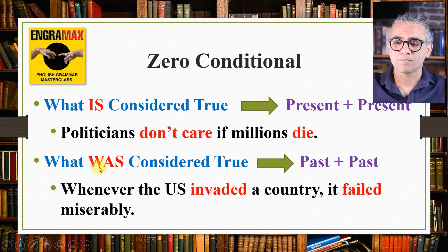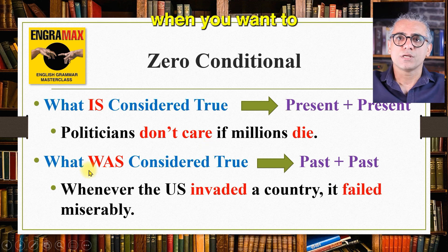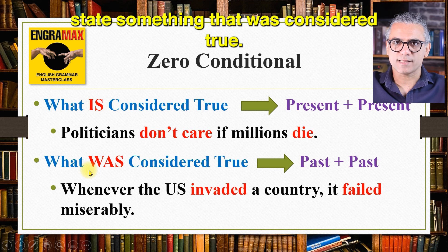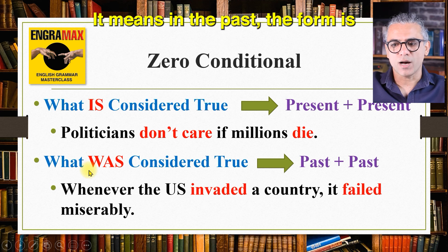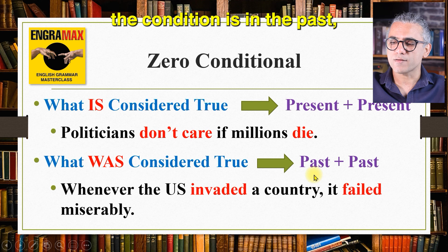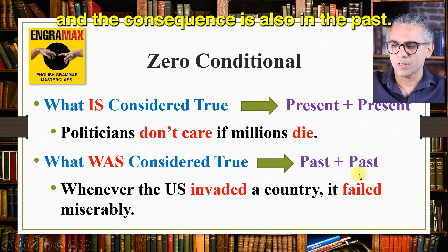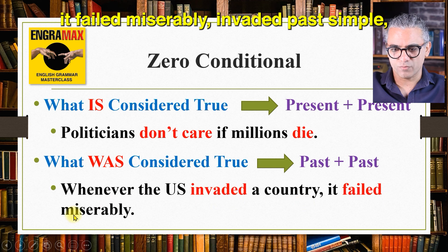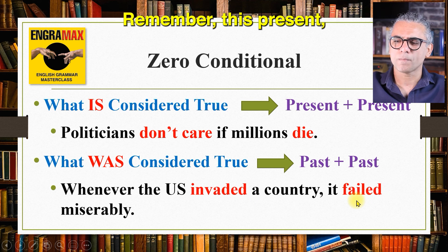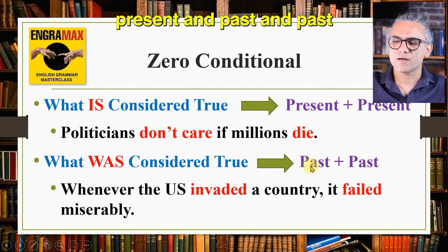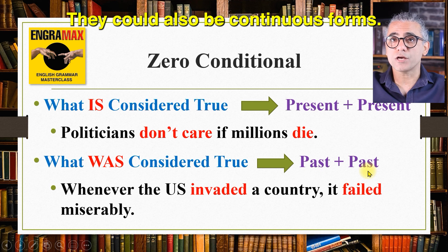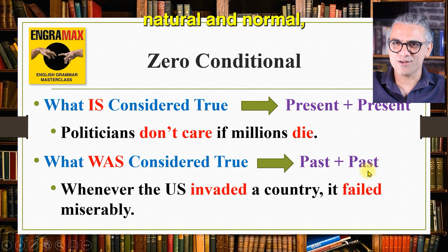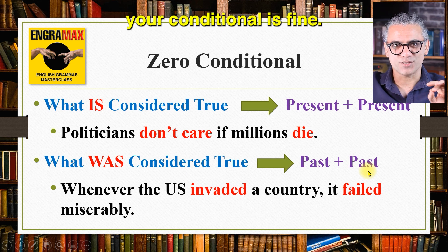Another form of zero conditional is when you want to state something that was considered true in the past. The form is: the condition is in the past and the consequence is also in the past. Example: whenever the US invaded a country, it failed miserably. 'Invaded' is past simple, 'failed miserably' is past simple. Remember, present-present and past-past are not necessarily simple forms — they could also be continuous forms.